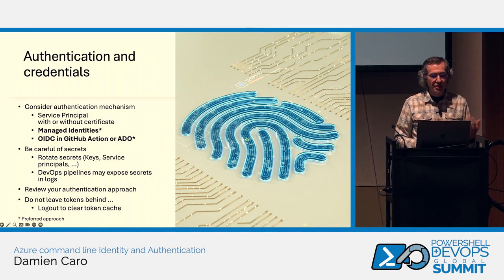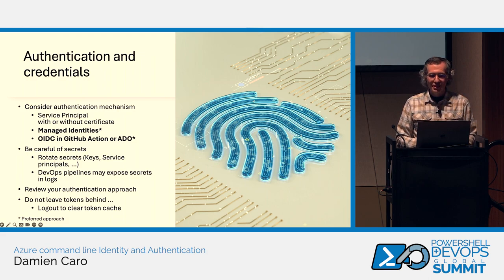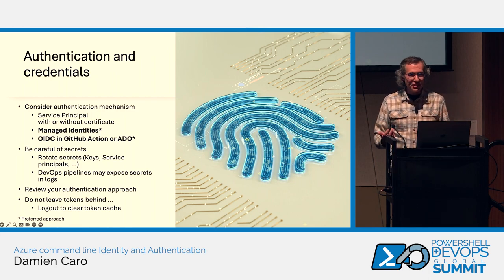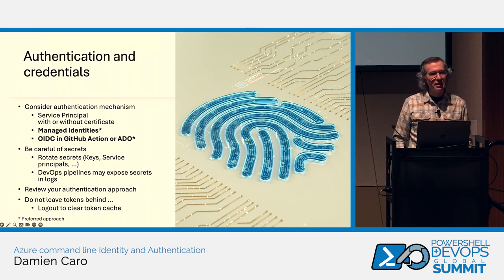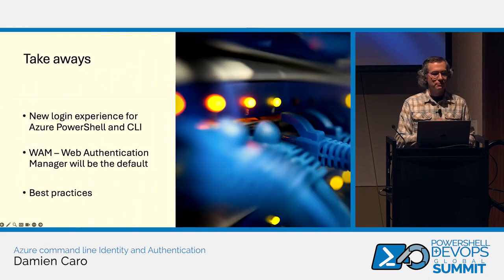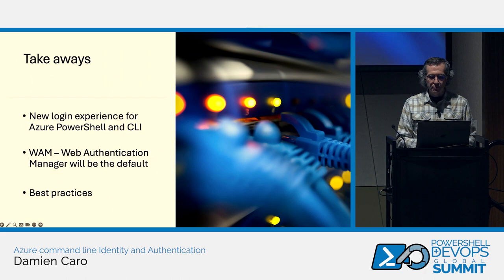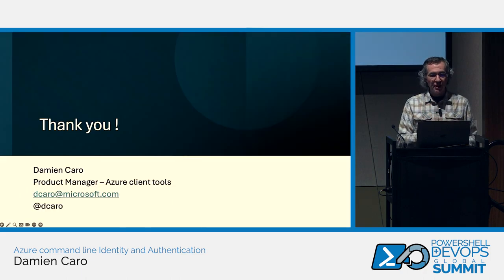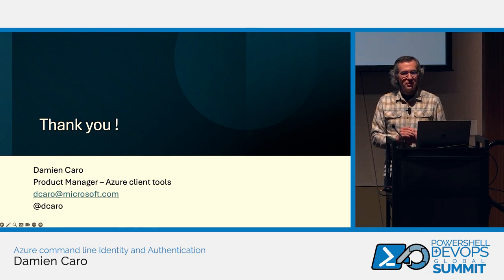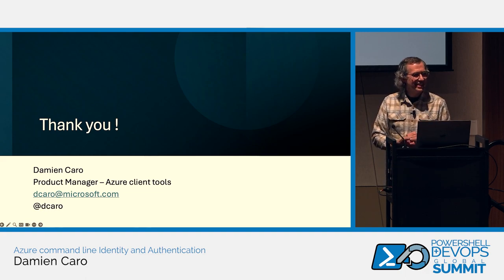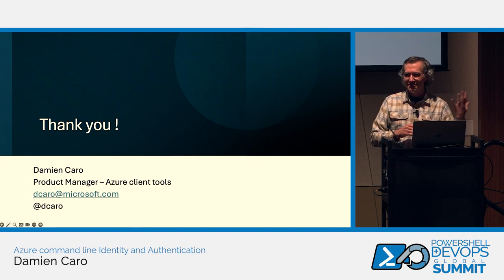Review your authentication approaches to keep things tidy, and do not leave tokens behind — if you're running a script, don't forget the logout step, even for ephemeral agents. Clean up after yourself. Three takeaways: the new login experience is coming as the default, think about WAM as the new default authentication flow, and apply the best practices and tips shared today. We have a few minutes for Q&A — go for it, or feel free to grab a coffee and enjoy the sun. Thank you.